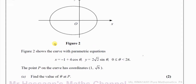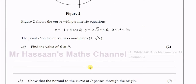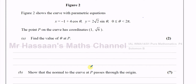The question tells us that figure two shows the curve with parametric equations x equals minus one plus four cosine theta, y equals two root two sine theta, and theta is between zero and two pi. The point P on the curve has coordinates one and root six. We need to find the value of theta at P.